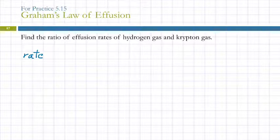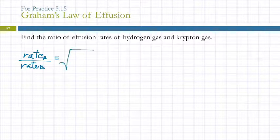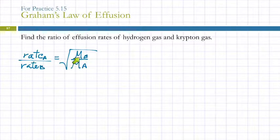For ratio of effusion rates, we need that equation. The rate of A to the rate of B is equal to the square root of the molar mass of B over the molar mass of A. This ratio in terms of the letters is upside down. Let's say that hydrogen is A and krypton is B.